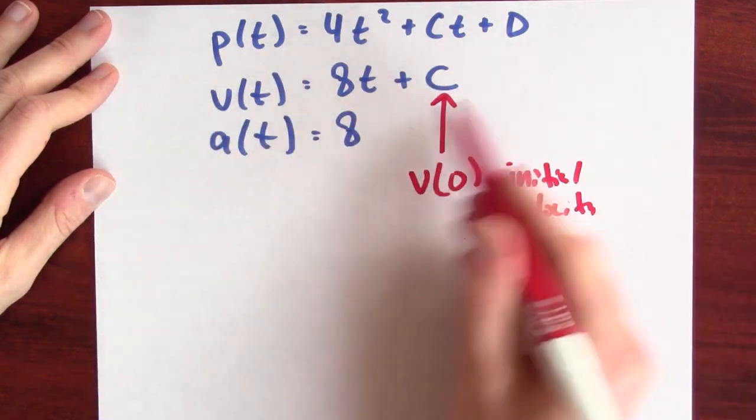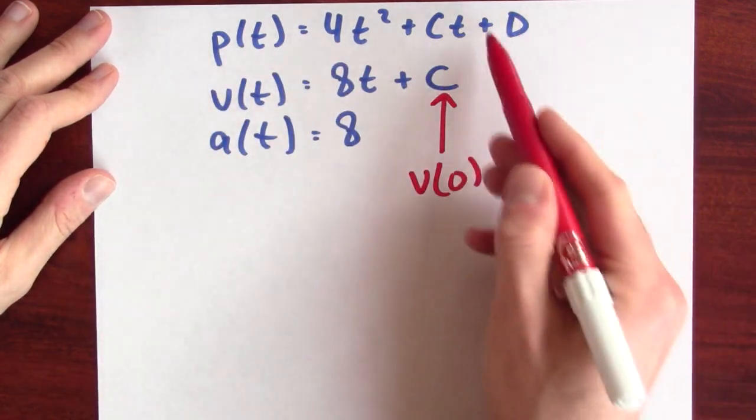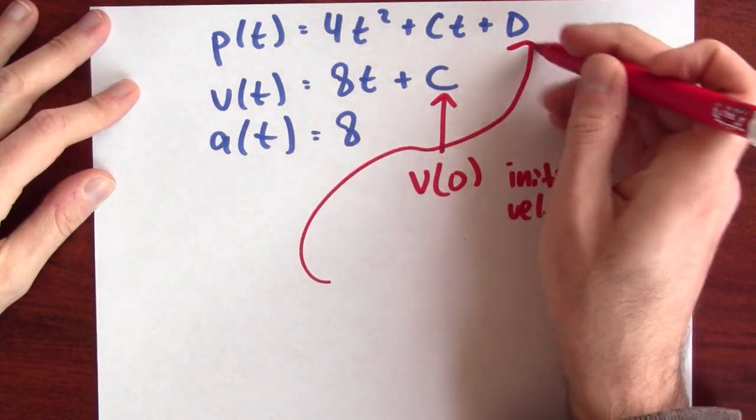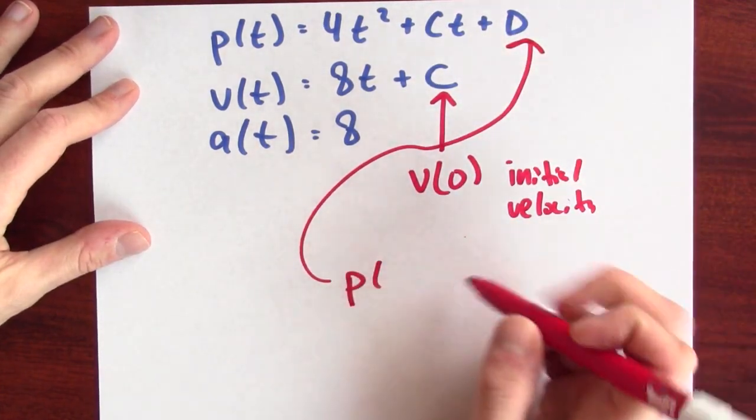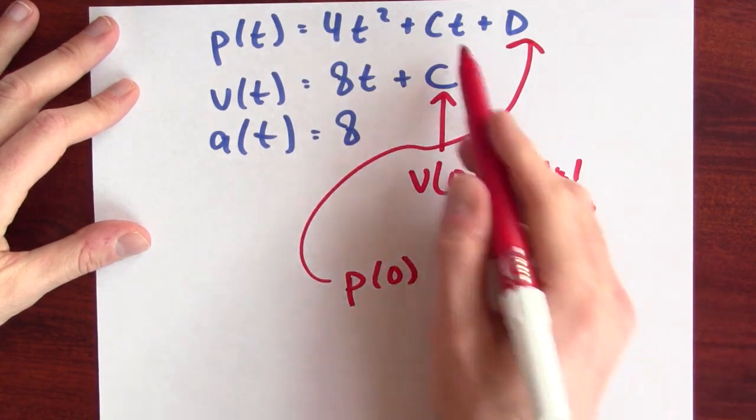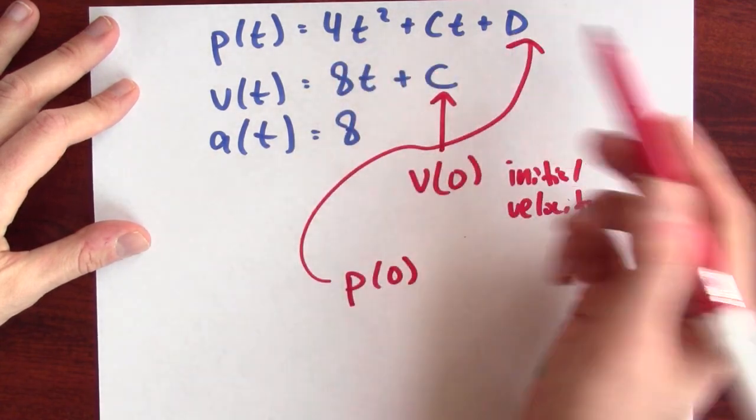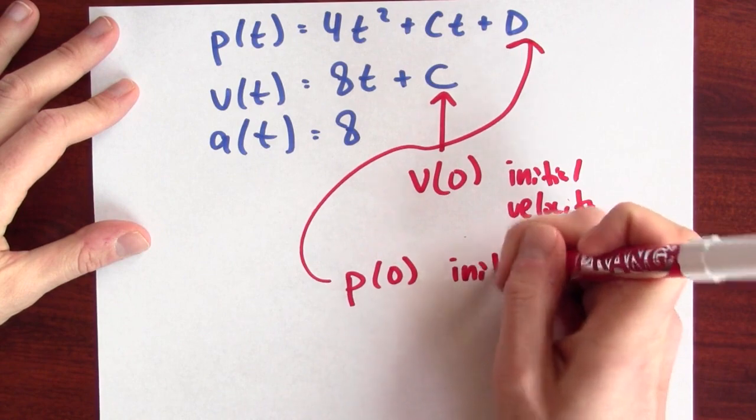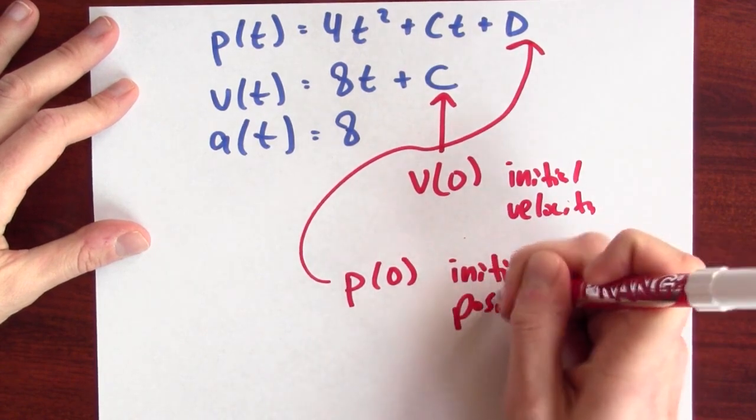Similarly, just knowing my velocity doesn't nail down my initial position. This d here is really p of 0. If I plug in t equals 0, I just get d. And that means that d is really providing my initial position.